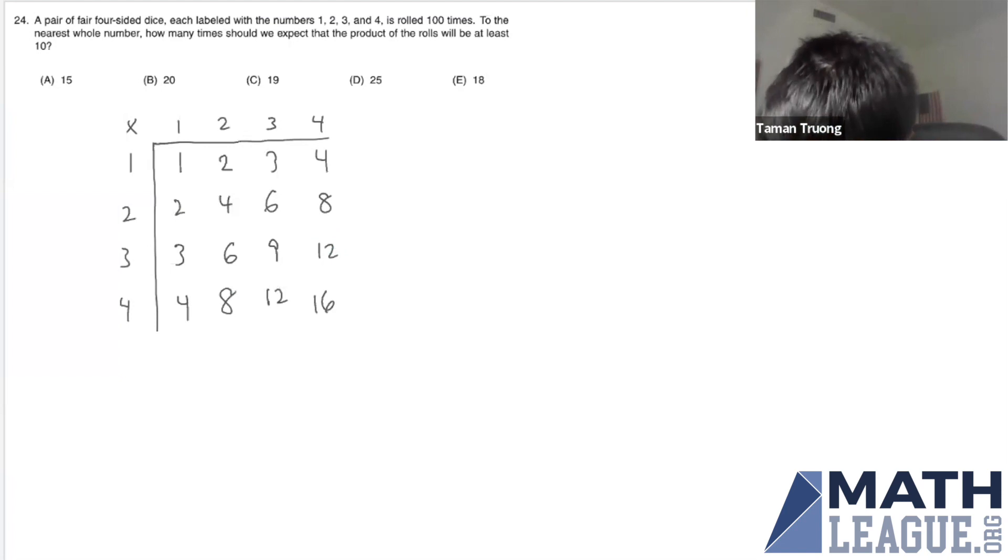And so here, these are the numbers that are at least 10: 12, 12, and 16. So the probability from here is 3 over 16.